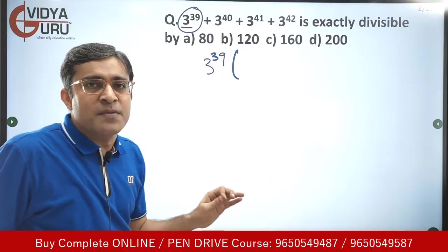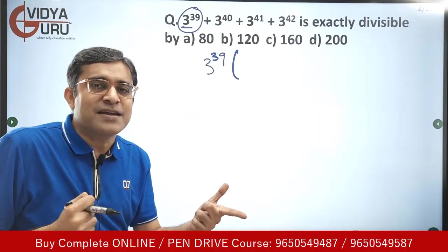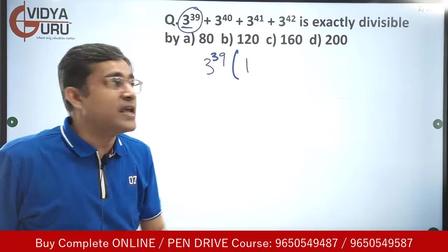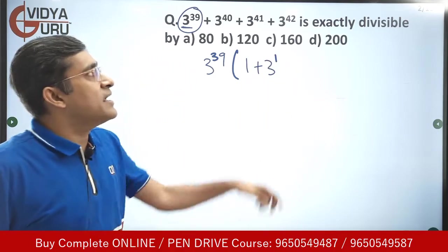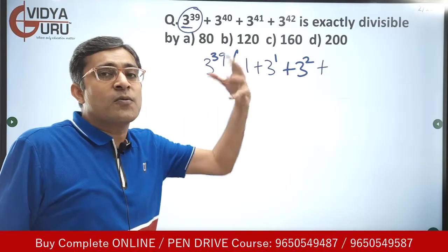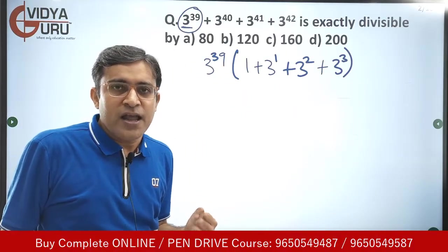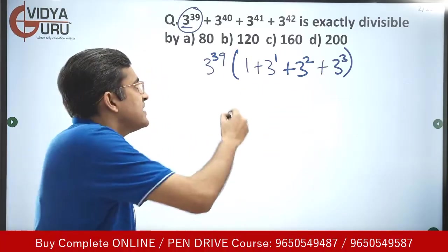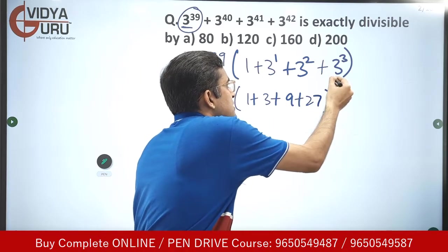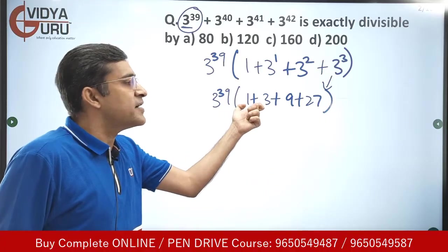We take 3 raised to power 39 as the common term. After factoring it out: from 3^39 we get 1; from 3^40 we get 3^1; from 3^41 we get 3^2; and from 3^42 we get 3^3, which is 27. Adding them up: 1 plus 3 plus 9 plus 27 equals 40. So the expression simplifies to 3 raised to power 39 into 40.